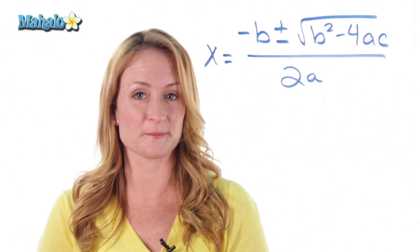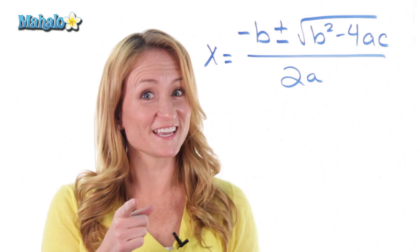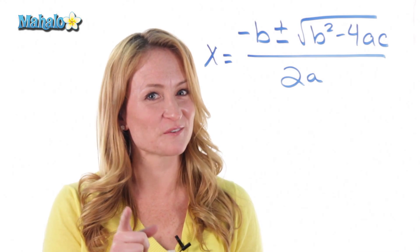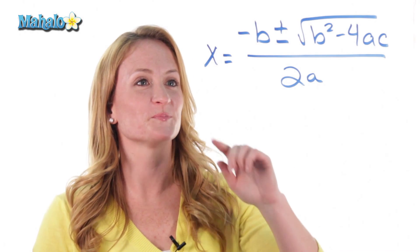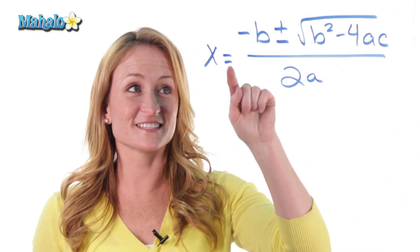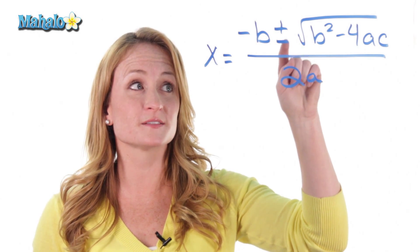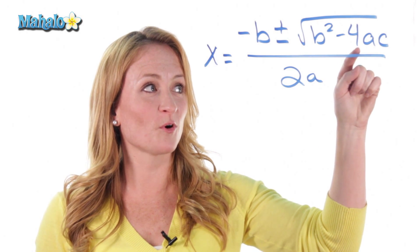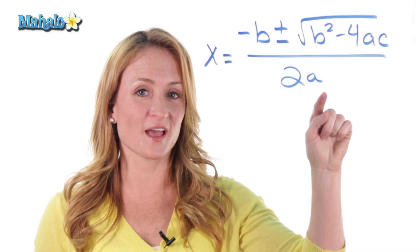Let's try it again. You're going to sing with me this time. No seriously. We're going to sing. I know nobody's around. Sing it with me. Remember it's Row Row Row Your Boat. So here we go. X equals opposite B plus or minus the square root B squared minus 4AC divided by 2A.